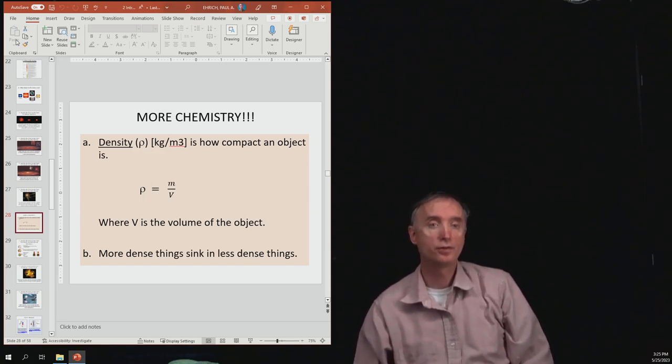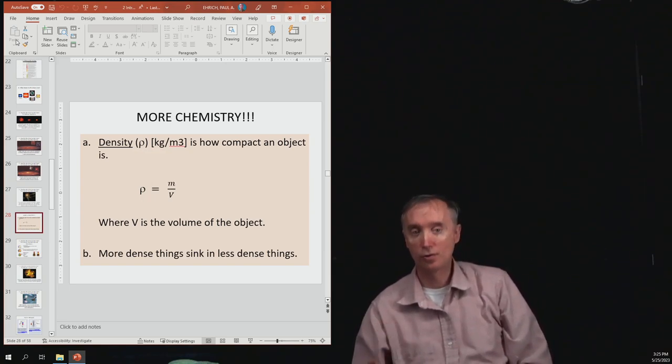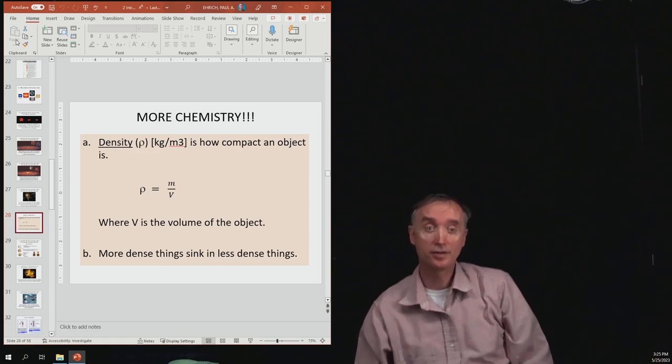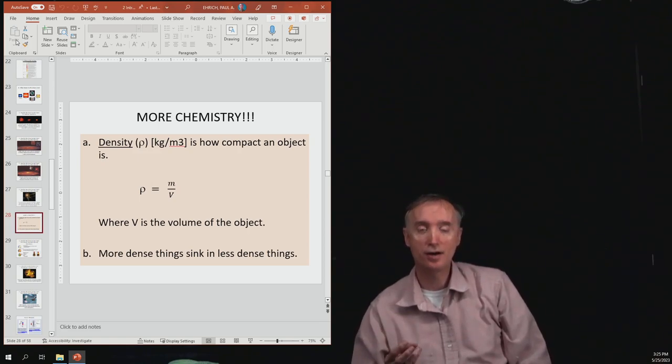So we've done the origin of the universe, we did the origin of stars, we've done the origin of the solar system. The next thing is we want to continue now with talking about the origin of the earth. Before we can do that, we need to go back to chemistry and talk about what density is.